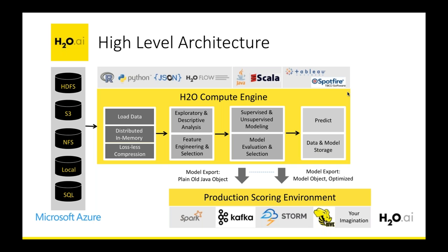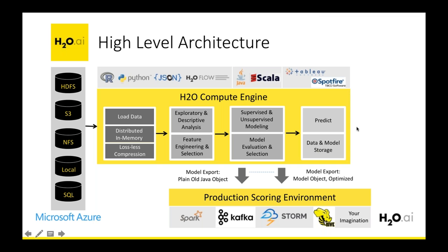Once you have a model, you can do in-memory prediction by scoring against the running H2O instance, or — more typically — export the model as a POJO (plain old Java object) or MOJO (binary representation), then shut down the H2O cluster. These model implementations can then run directly in real-time scoring or streaming environments like Spark, Kafka, Storm, or Hive.